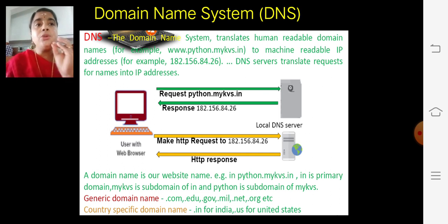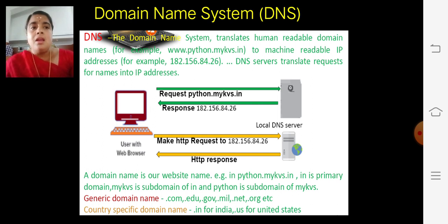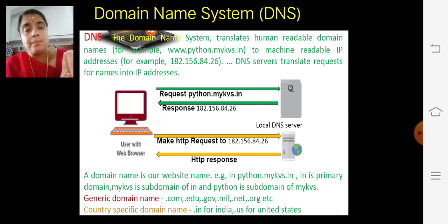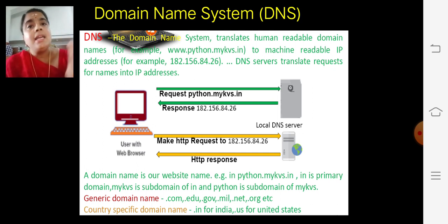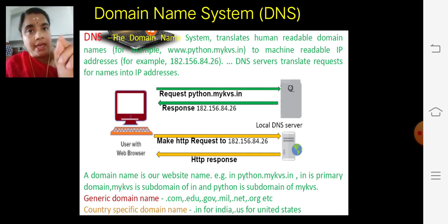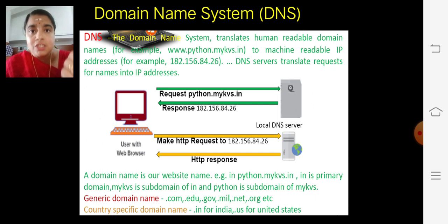DNS translates human-readable domain names into machine-readable IP addresses. That is, the DNS server translates requests for names into IP addresses — this is called domain name resolution. From the domain name, it looks up the corresponding IP address. In the server, they maintain a database storing each and every domain name with its own IP address. So if you give a domain name, it retrieves the IP address, so that it can easily find the system on which the web page is residing.